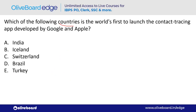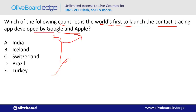Which country is the world's first to launch the contact tracing app developed by Google and Apple? The answer is Switzerland — option C. Switzerland's capital is Bern, and its currency is the Swiss Franc.